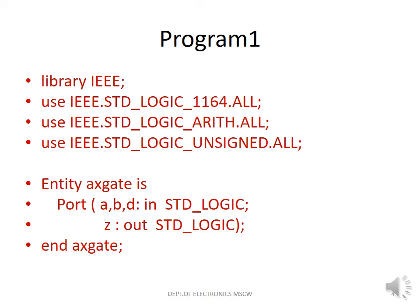Let us write the program for the same circuit. We should know what to write first: the four lines of library files, then the entity part, and next is the architecture part.